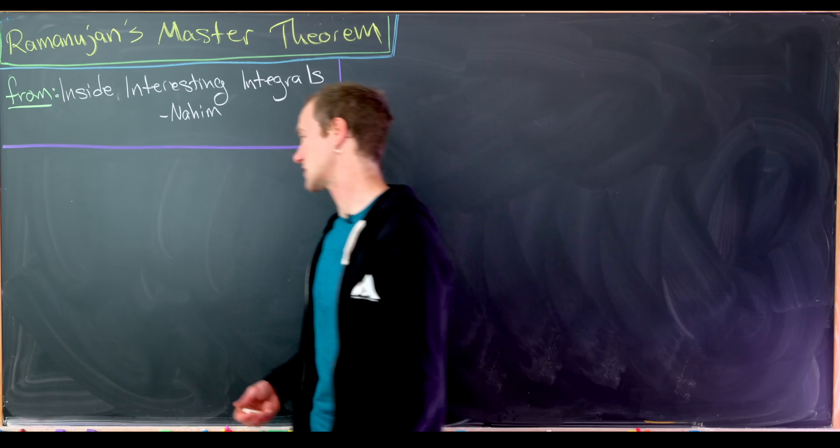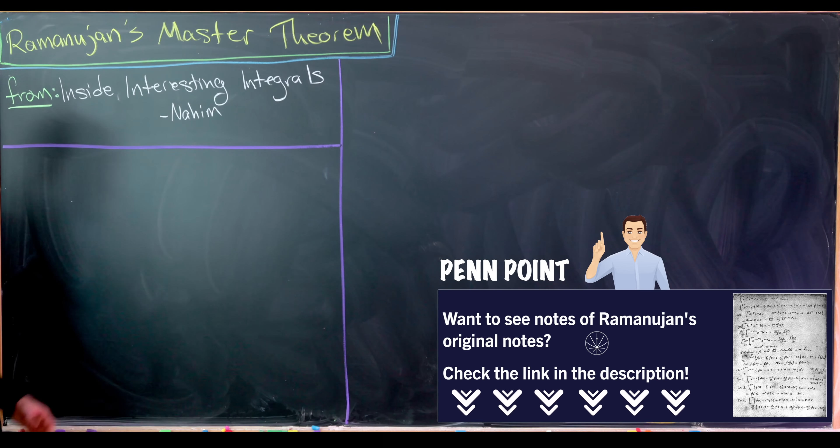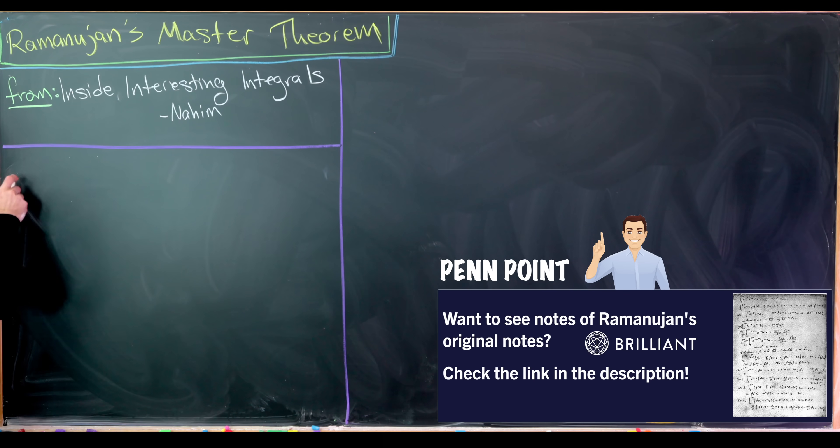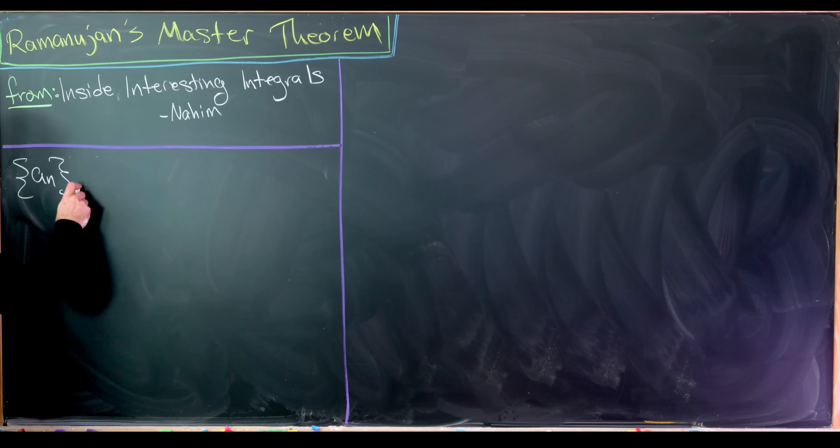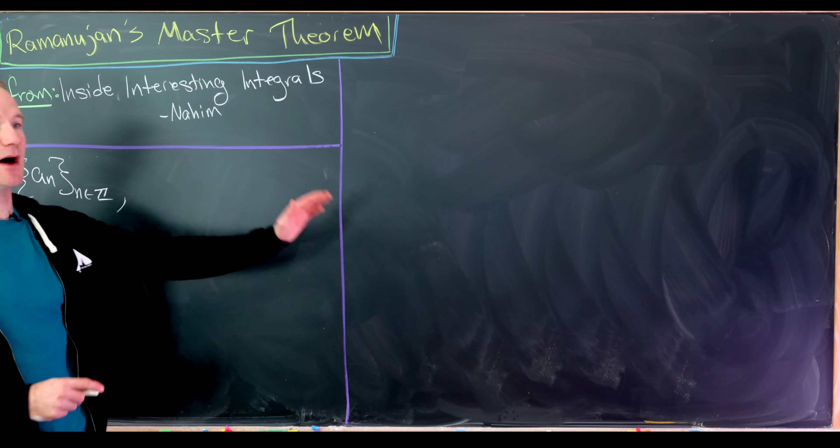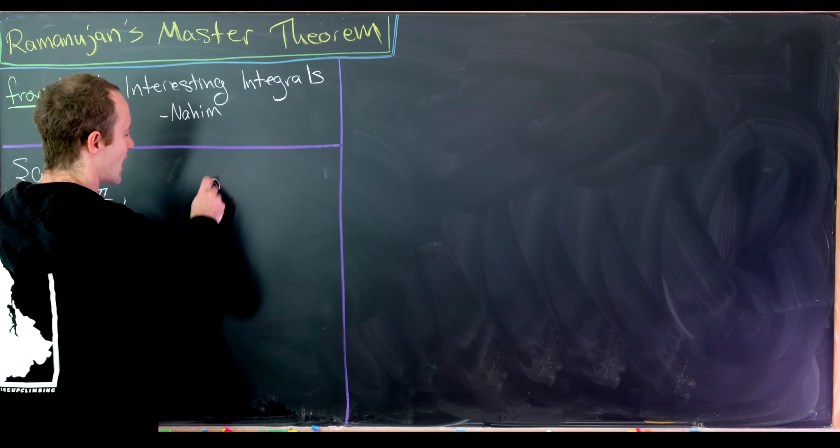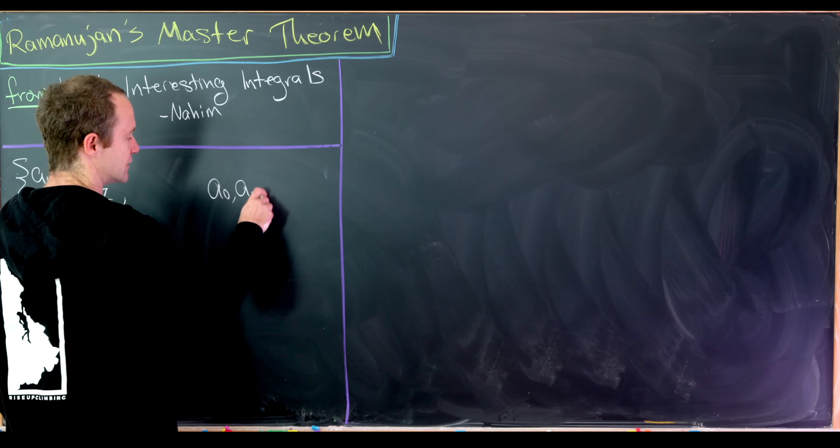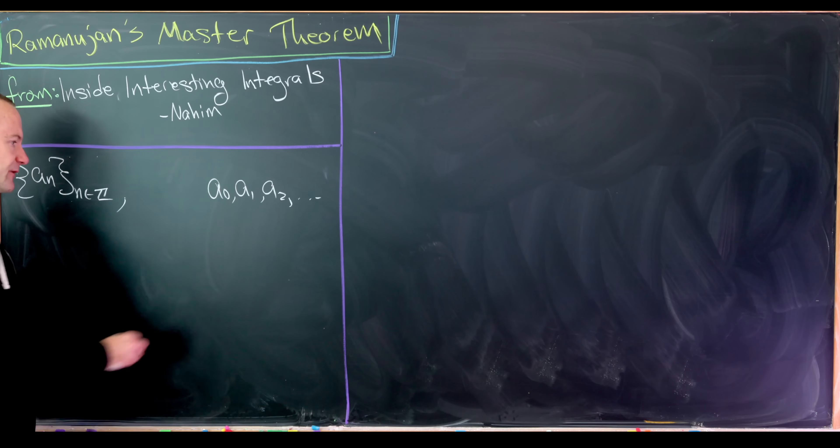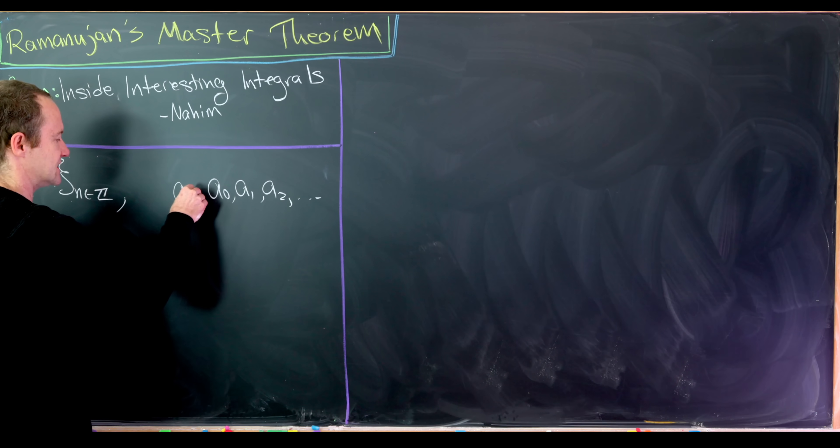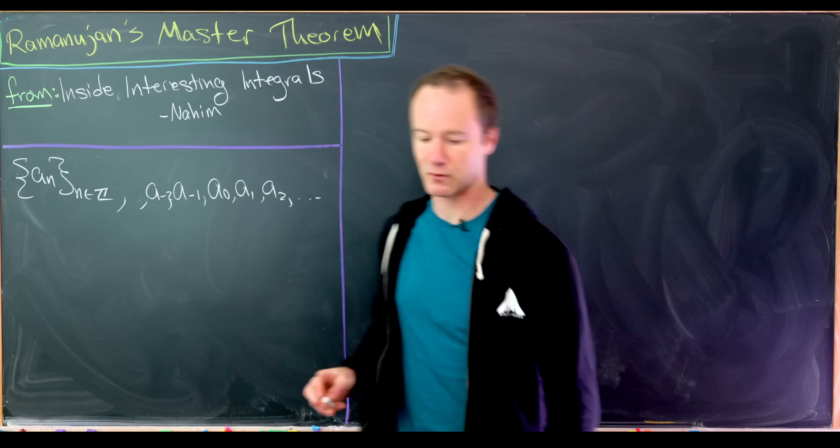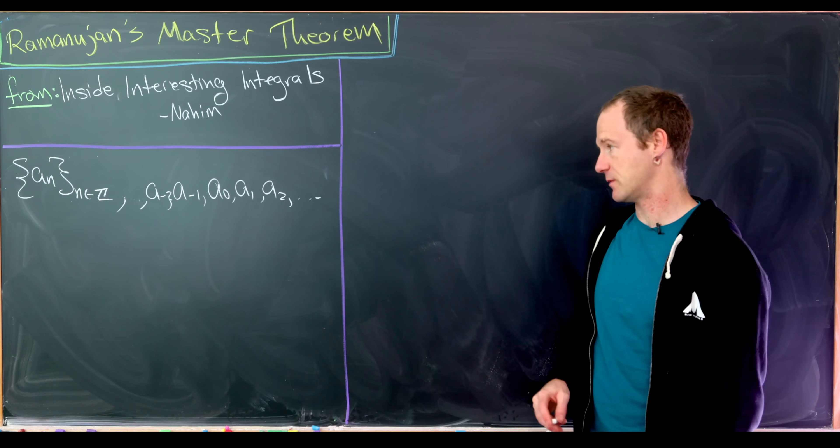Let's start with our main building blocks. We're first going to have a sequence of numbers, but that sequence will be indexed over the integers. So we have this list a_n as n runs through all integers. Notice this is a doubly infinite sequence. Maybe right in the middle would be a_0, and then it goes up with positive indices a_1, a_2, a_3, and so on. And then it'll go back with negative indices a_-1, a_-2, and so on in the reverse direction. So that's one of our building blocks.